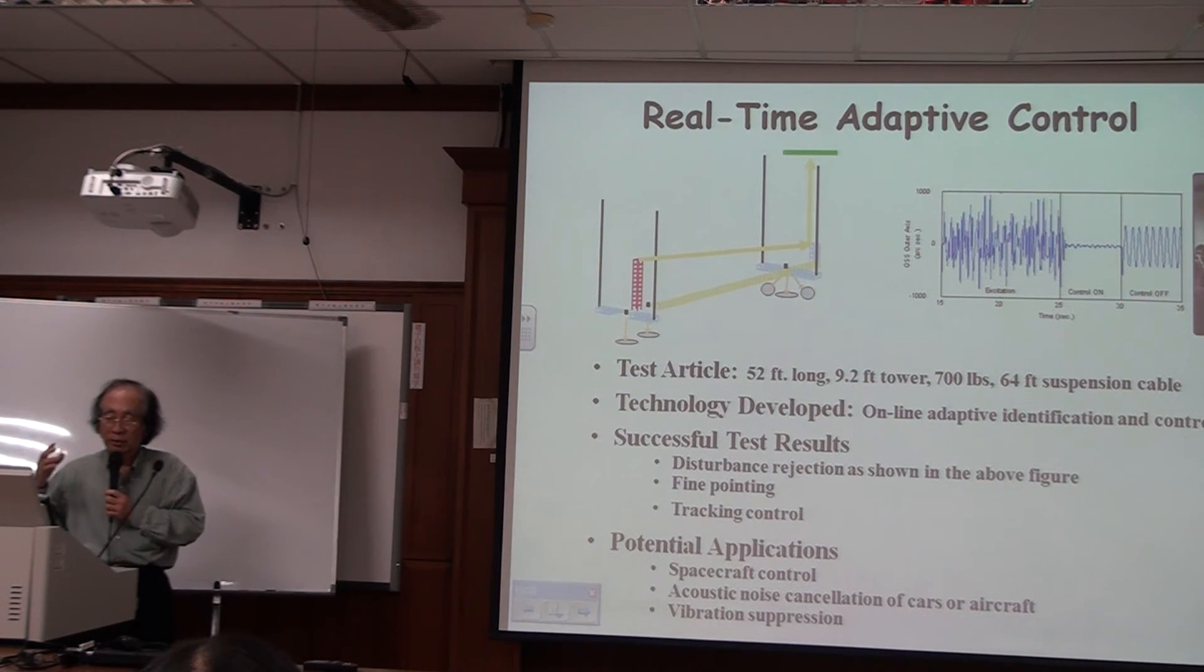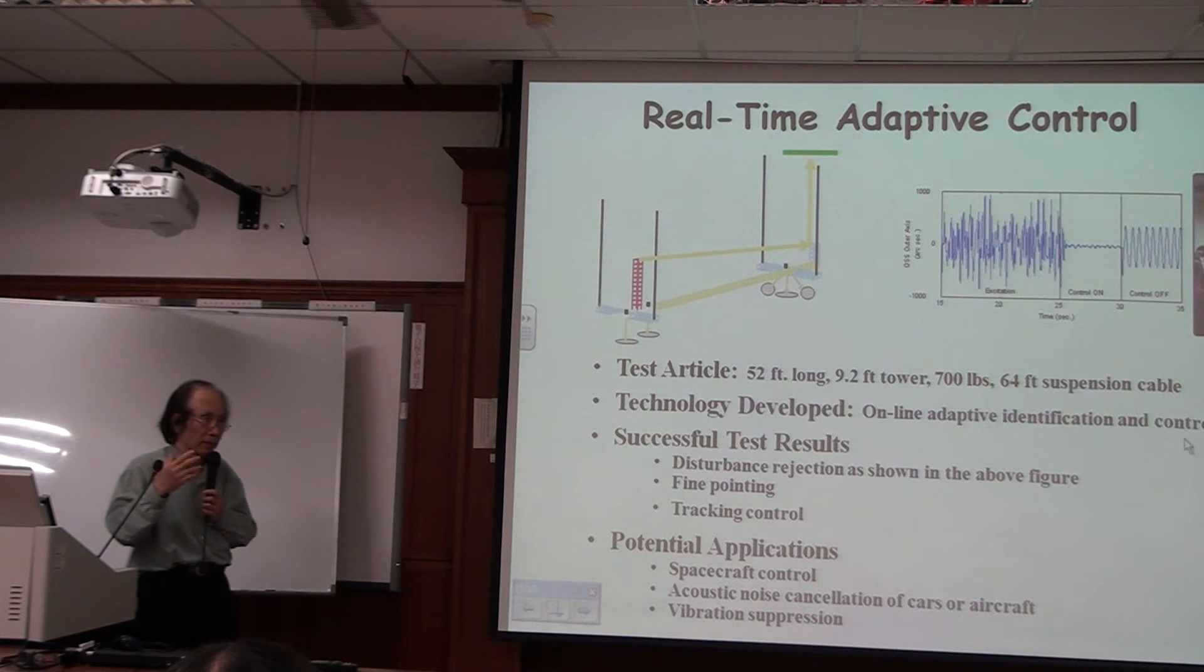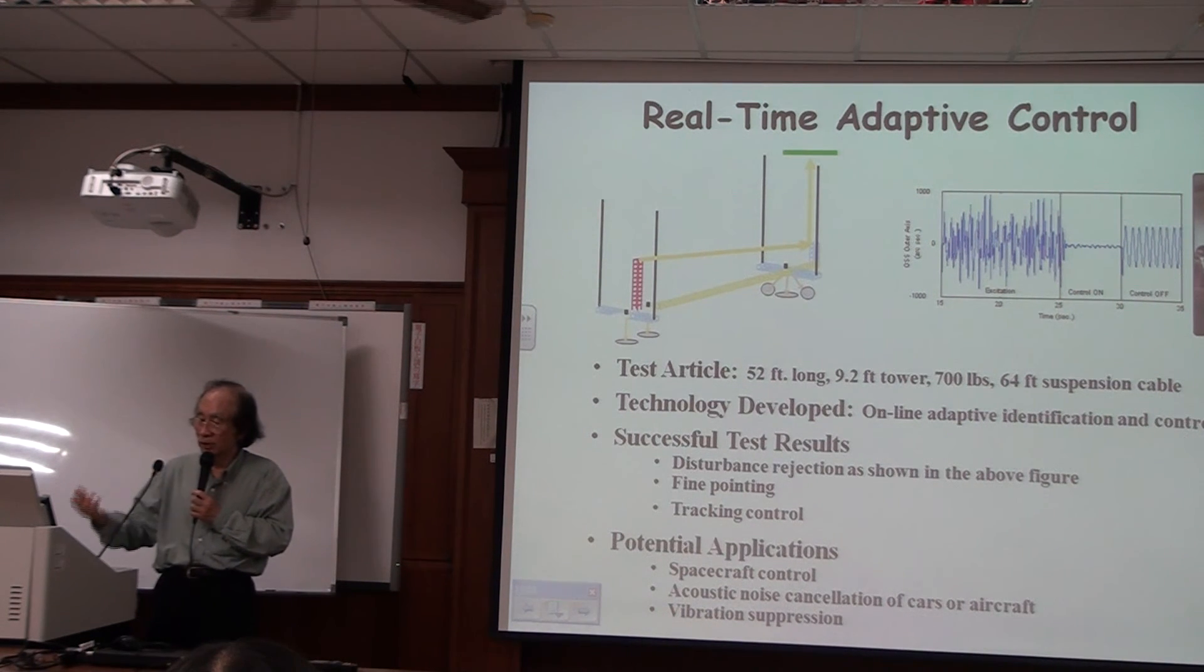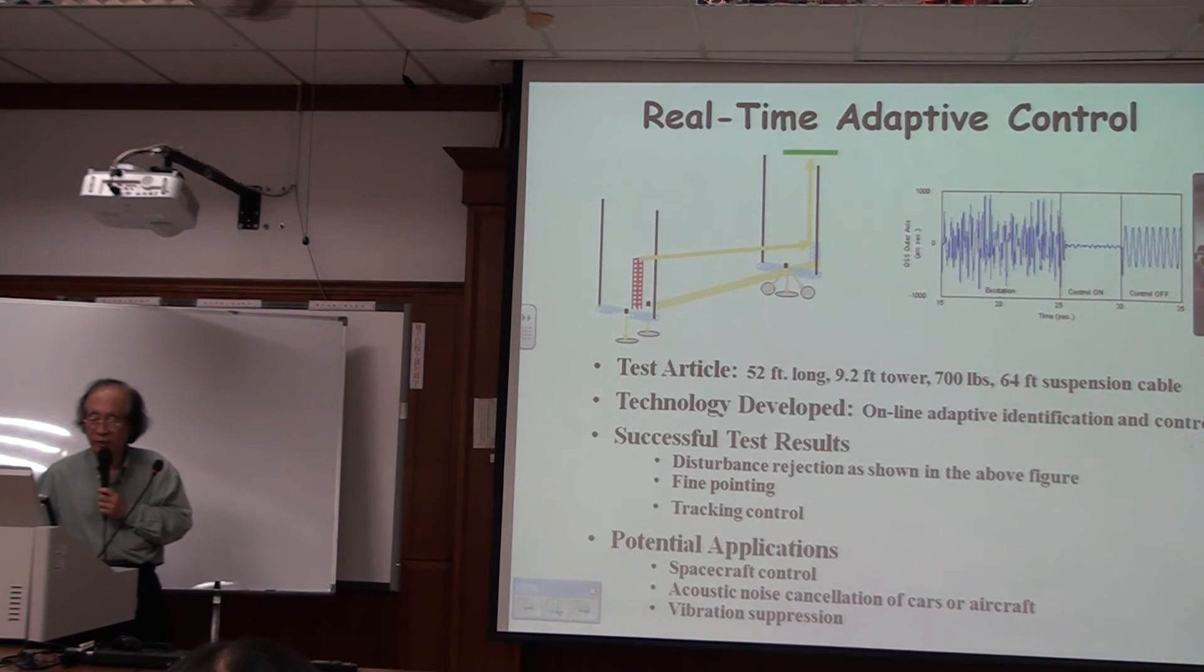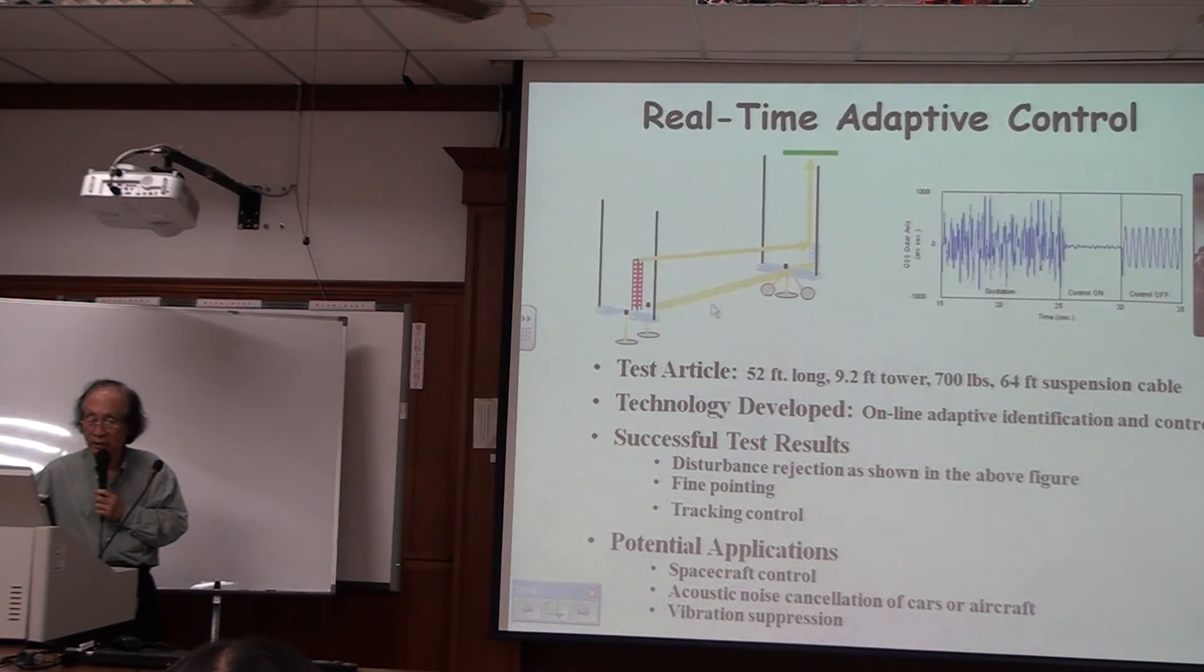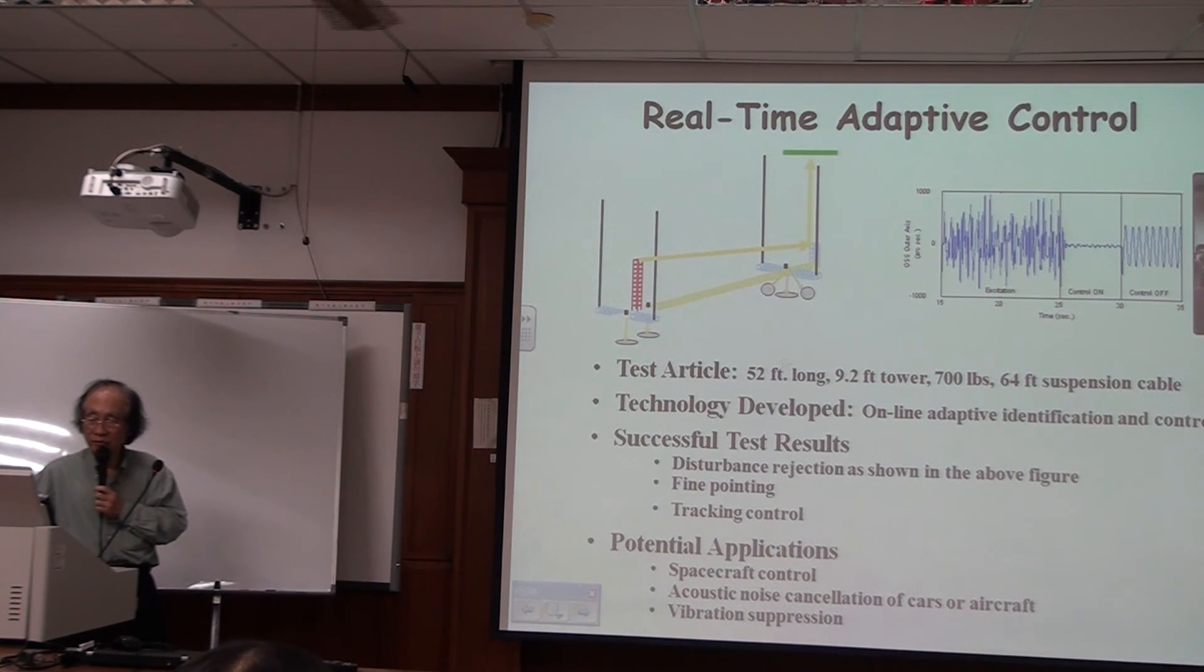That means because we don't know the model itself, we depend on the system ID to create a model for us to do the controller design. Now how can we do that? And this is showing you how to do that. And then I'm going to show you, they don't know there are a lot of other things I can show you, but here I'm going to show you what we call real-time adaptive control.